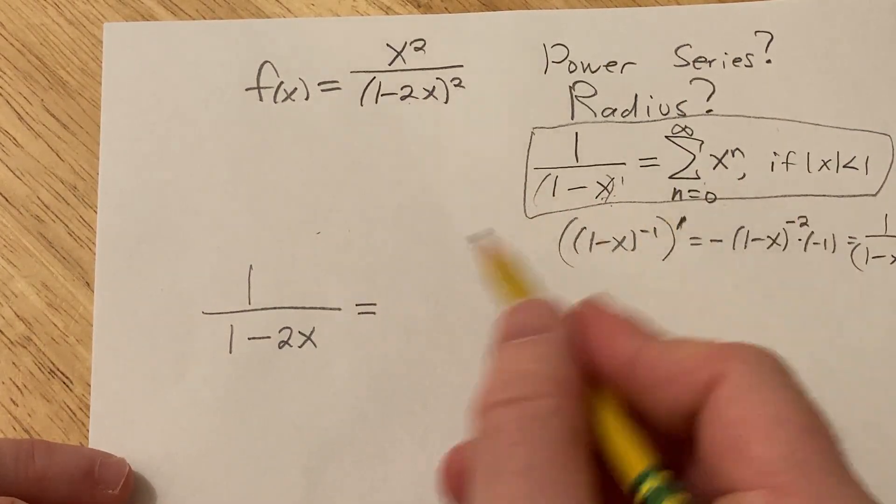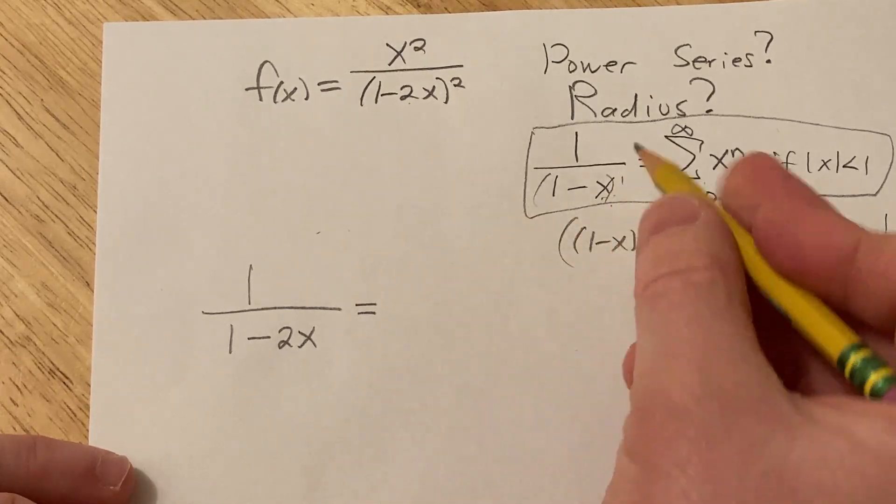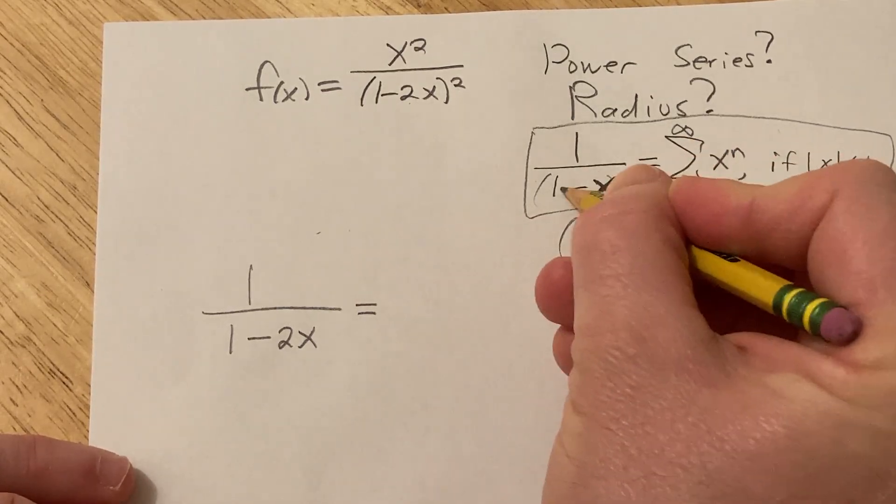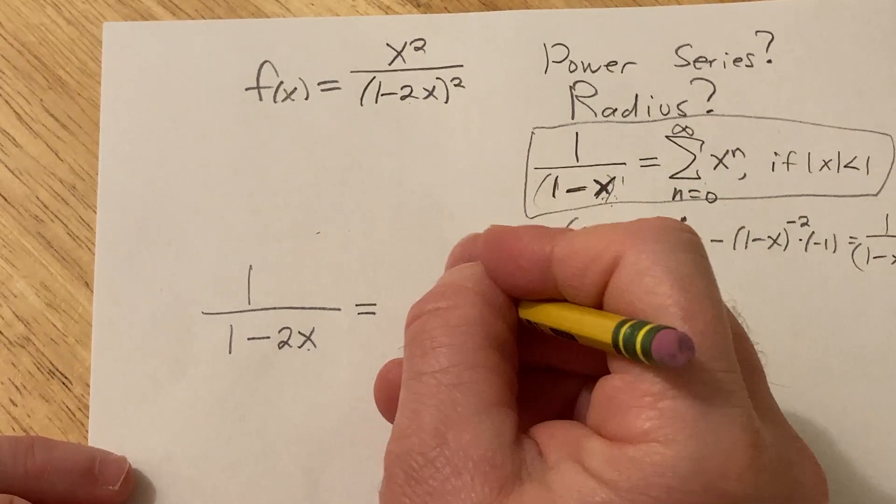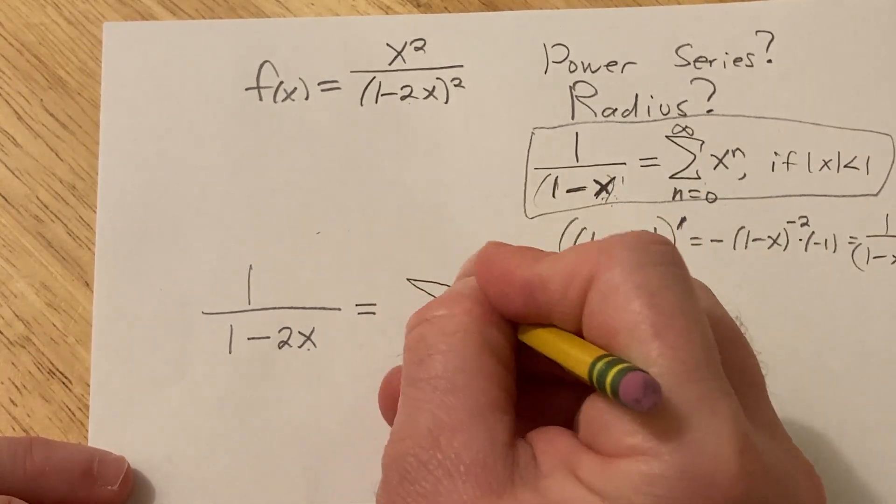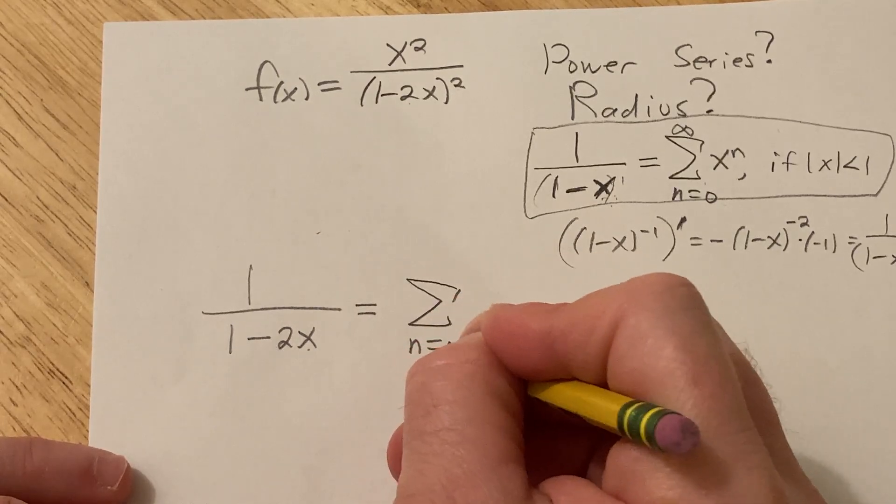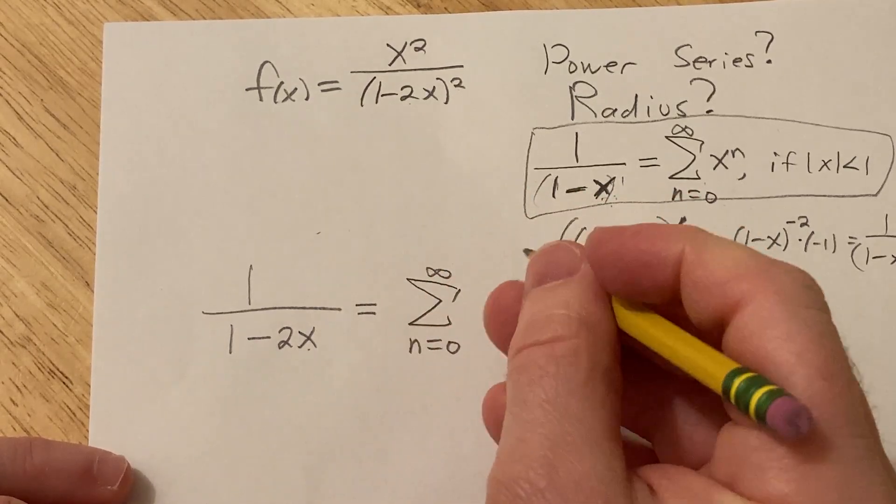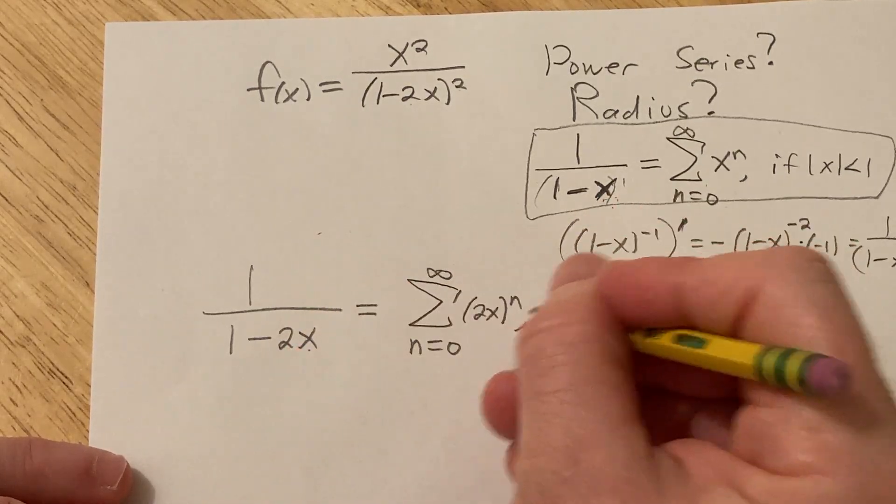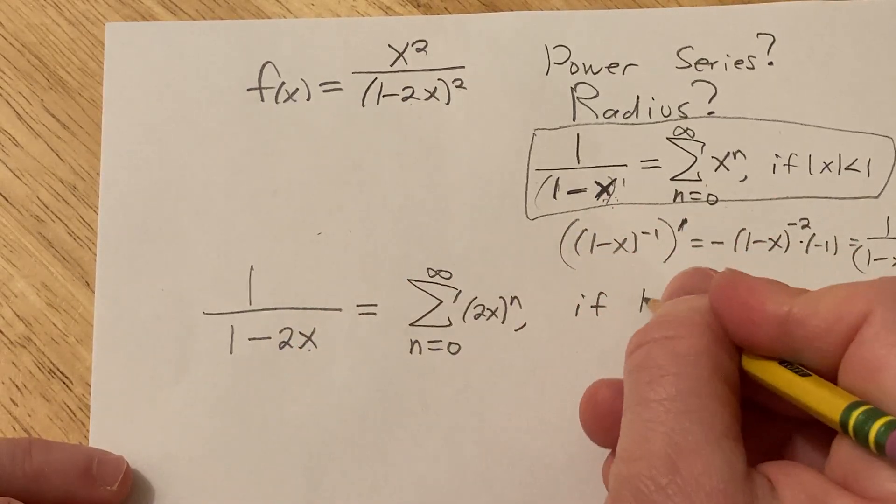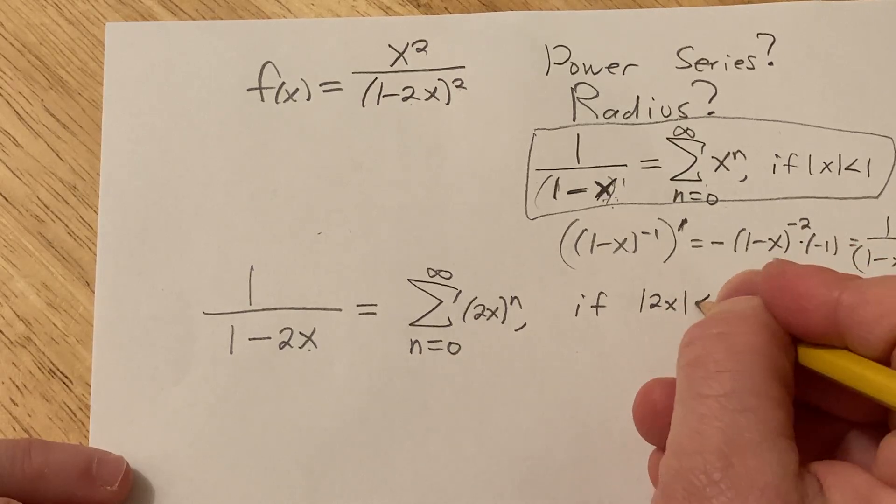So let's use this formula here on this function. This is our x here, right? This is 1 minus x. Here our x is 2x, so this will be equal to the infinite sum as n goes from 0 to infinity of 2x to the n. This whole thing is our x.